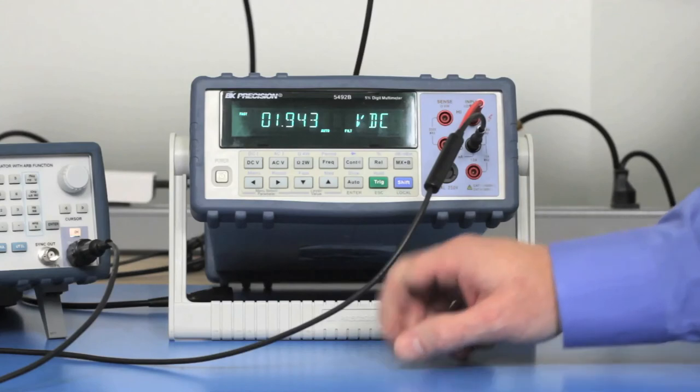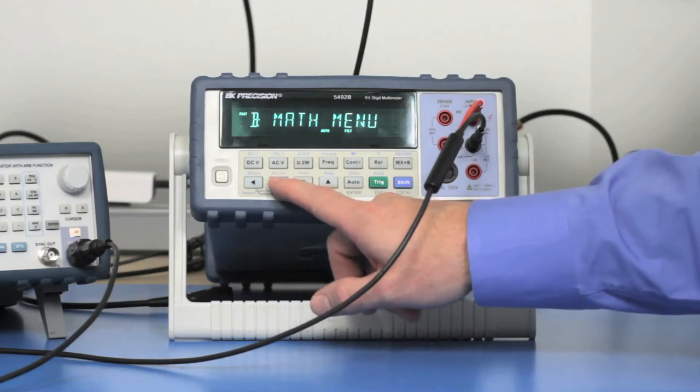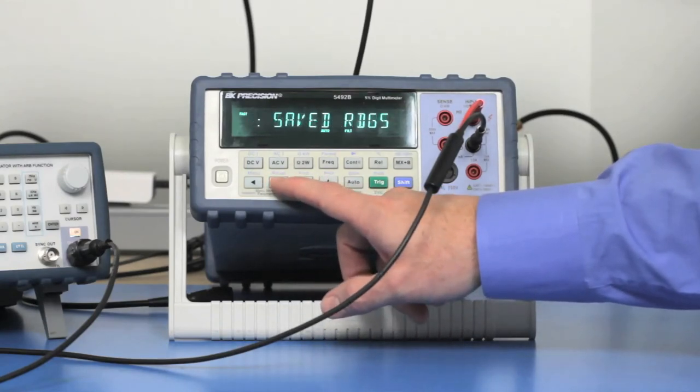So now it has stopped making its measurements, and to view them, you press Shift, left arrow, and we will go to System Menu again, and go to Saved Readings.